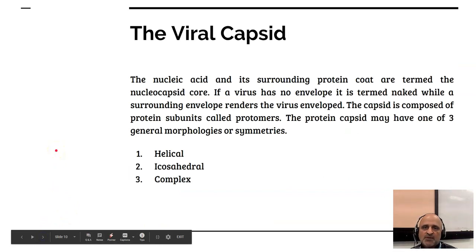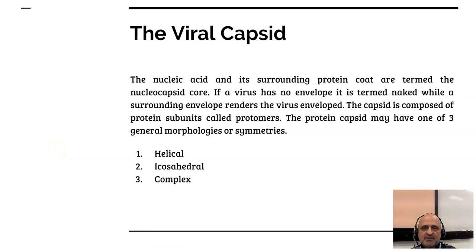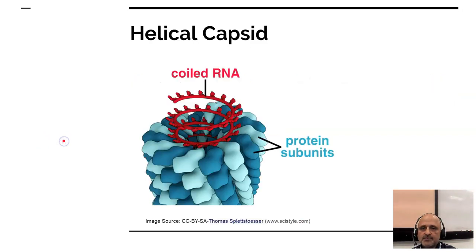The viral genome is enclosed in a capsid and there are three basic configurations by which we define a viral capsid. The first configuration is helical, the second is icosahedral, and the third one is complex. This is an example of a helical capsid — the tobacco mosaic virus — where you can see the protein subunits which have been assembled around a coiled RNA core.